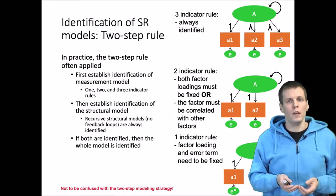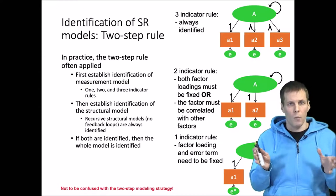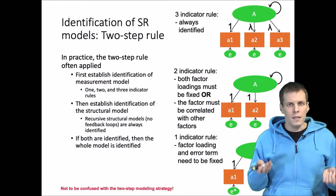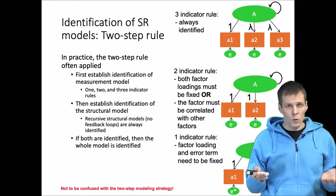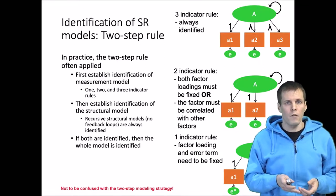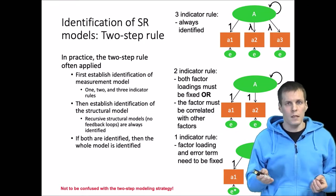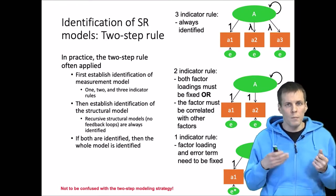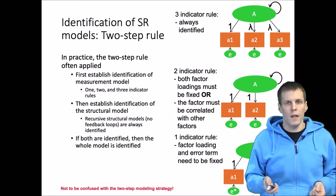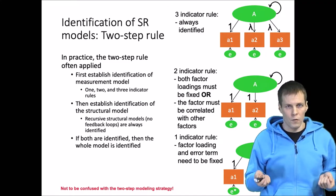After that we take a look at the latent variable part of the model — are the relationships between the latent variables identified? It's useful to know that all recursive models are identified, and that covers the majority of cases. For the cases it doesn't cover — the non-recursive models — we simply apply the identification rules from simultaneous equations in econometrics, and that establishes the identification of the full model.